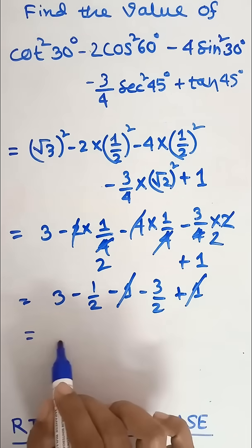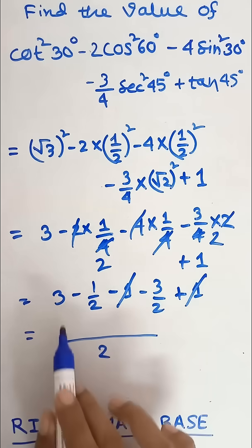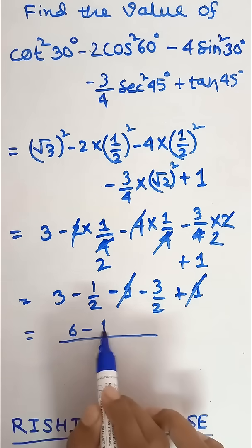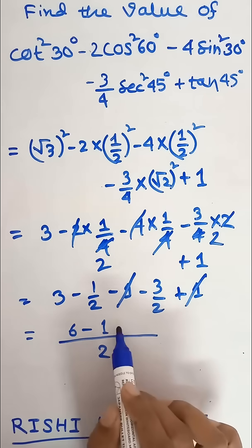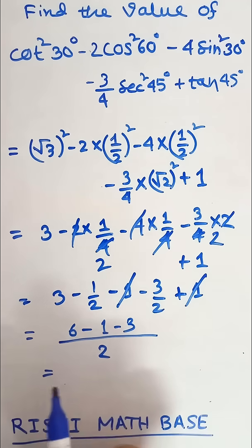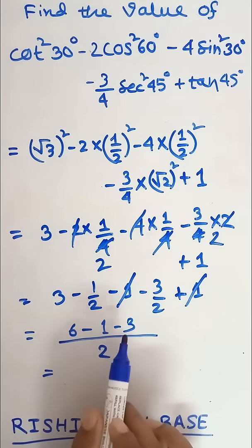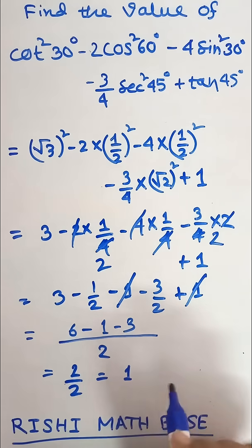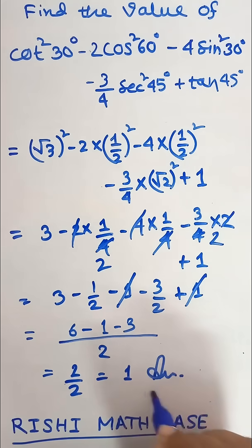So the LCM is 2 and this is 6 minus 1 minus 3, so this is 2 by 2 that is equals to 1. This is our answer.